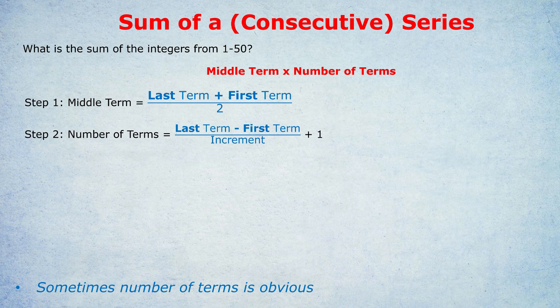The last term is 10. Take away the first term, which is 0. 10 take away 0 is 10. Divided by the increment. The increment is the gap between each term. And obviously, if we're dealing with the integers from 0 to 10, the gap between each term is 1. If we're dealing with even numbers, the gap between each term would be 2. Anyway, 10 take away 0 is 10. 10 divided by 1 is 10. And 10 plus 1 is 11.